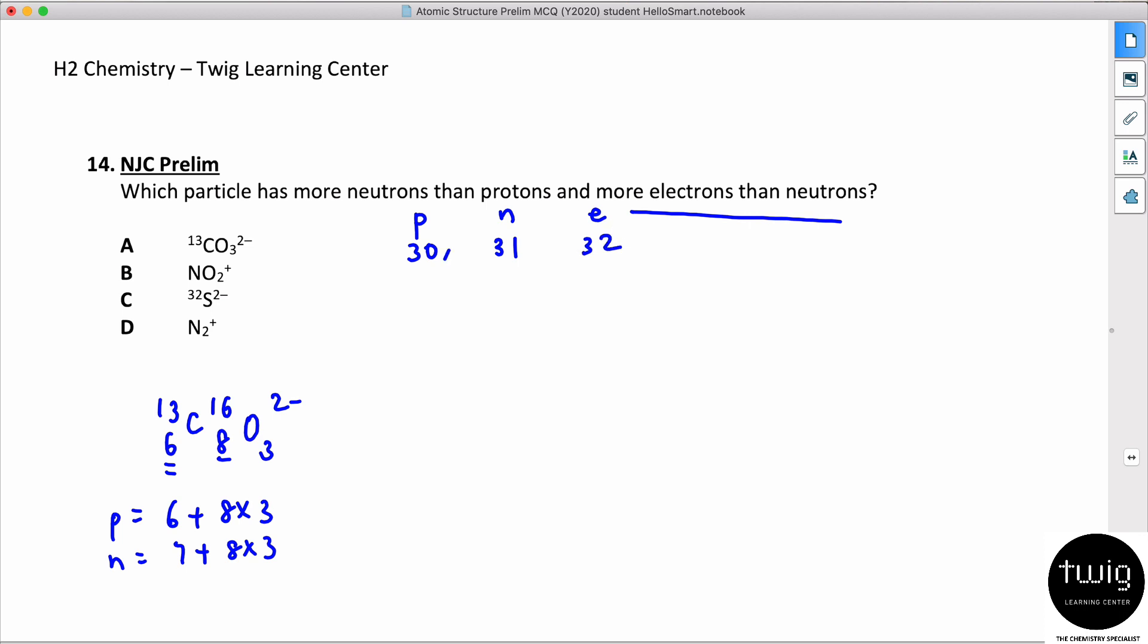So NO₂⁺, this is 14-7, 16-8. The protons: 7 plus 8 times 2, so 16 plus 7, that gives you 23. The neutrons is 7 from nitrogen, plus 8 times 2, so it's actually the same thing, 23. Number of electrons: since it's positively charged, it would have 22 electrons, right?